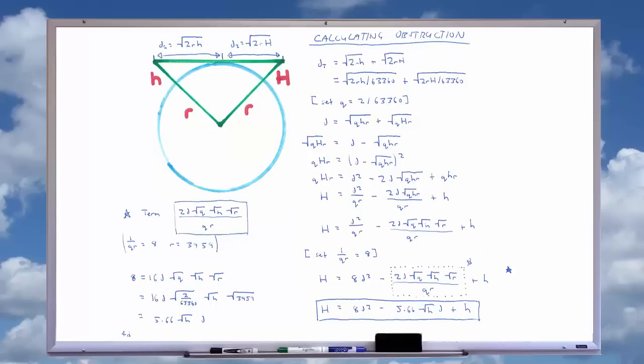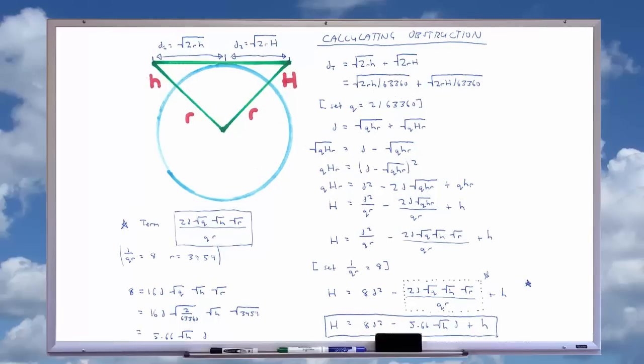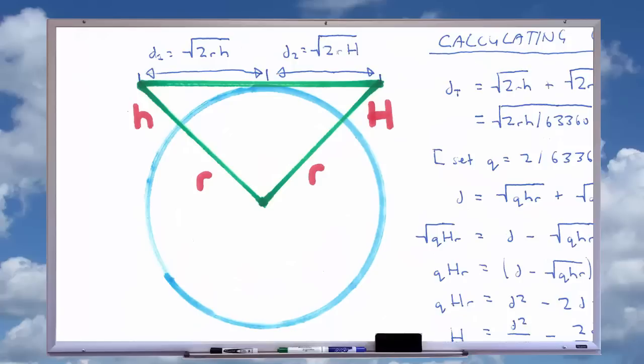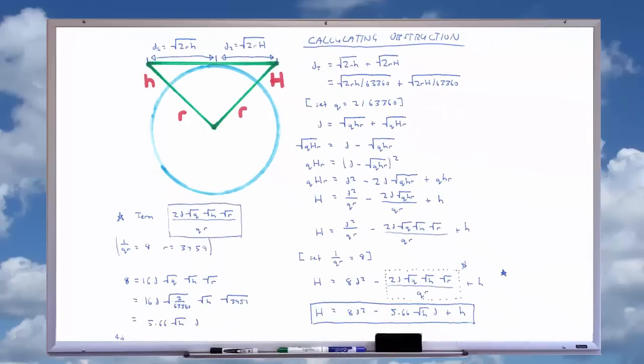With this equation, we can now determine a formula to give the expected obstruction created by the earth for a given height. We know that the distance between an observer and the lowest observable height of an object in the distance will be equal to the distance to the horizon for point A, plus the distance to the horizon for point B, at the lowest observable height of point B.